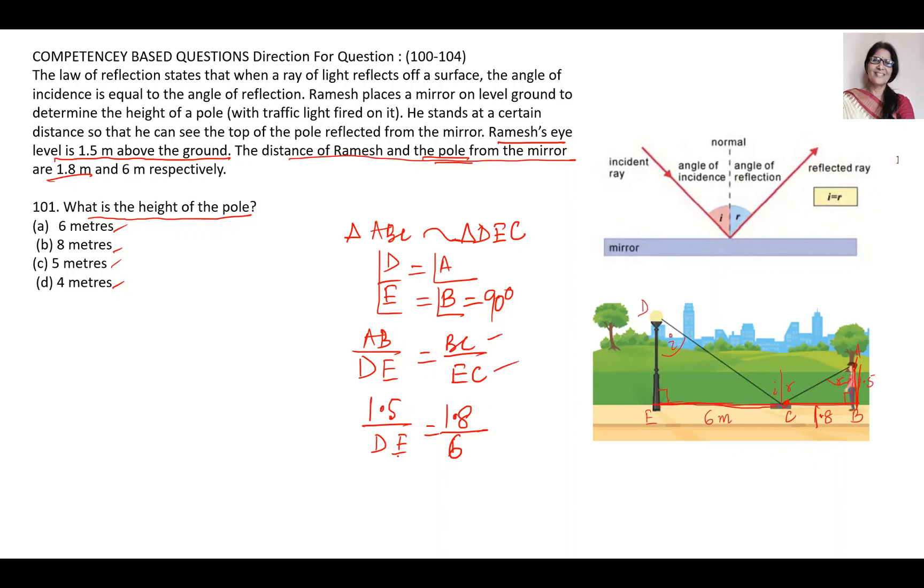AB upon DE is equal to BC upon EC. 1.5 upon DE is equal to 1.8 upon 6. DE is equal to 6 into 1.5 divided by 1.8, or that will be 9 divided by 1.8. So DE is equal to 5. So it will be 5 meter. C is the answer.